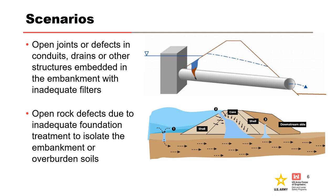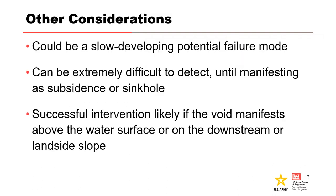The most critical location for a void to form is beneath the impounded water, as this leads to potential introduction of full hydraulic head to a more downstream location. Internal migration into rock defects is the most common scenario for USACE dams, whereas internal migration into defects in conduits is the most common scenario for USACE levees. This failure mode can develop very slowly over a long period of time, it can be very difficult to detect until the void progresses to the surface and is observable, and successful intervention is likely if the void forms above the water or on the downstream slope.